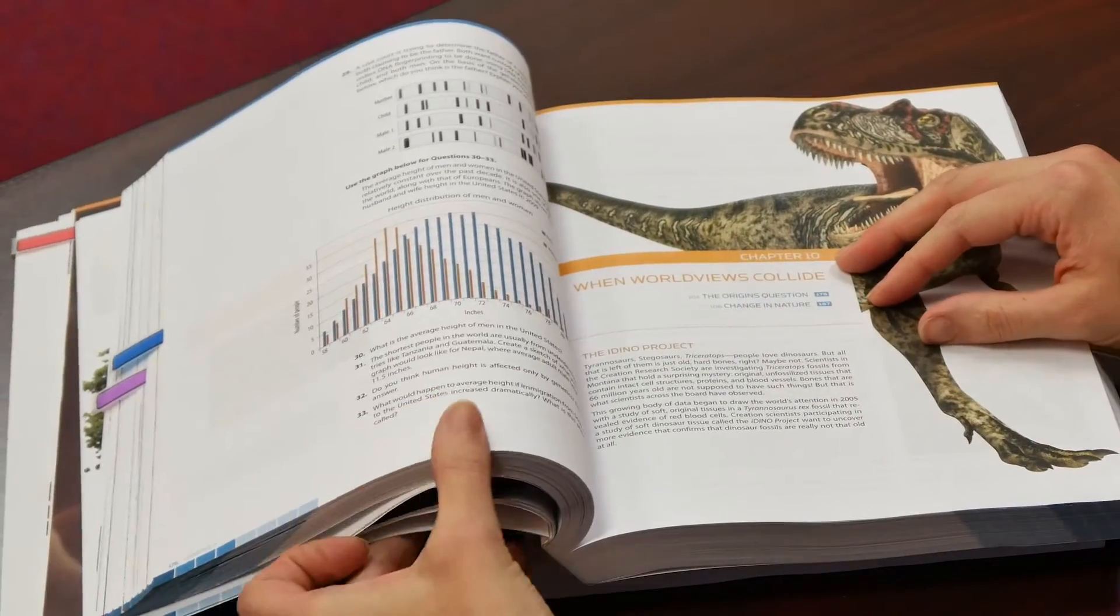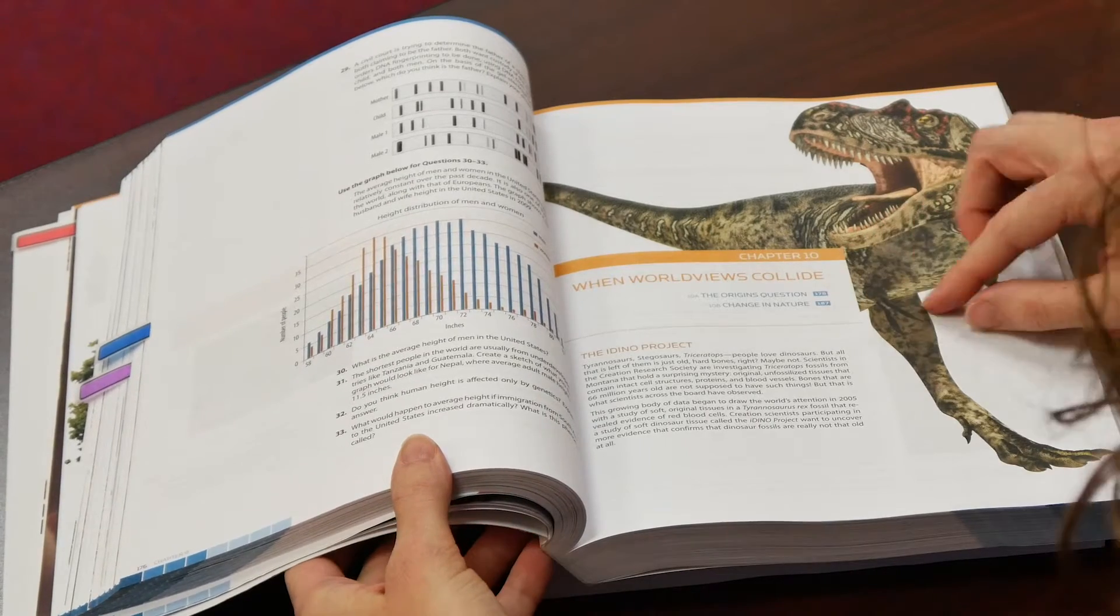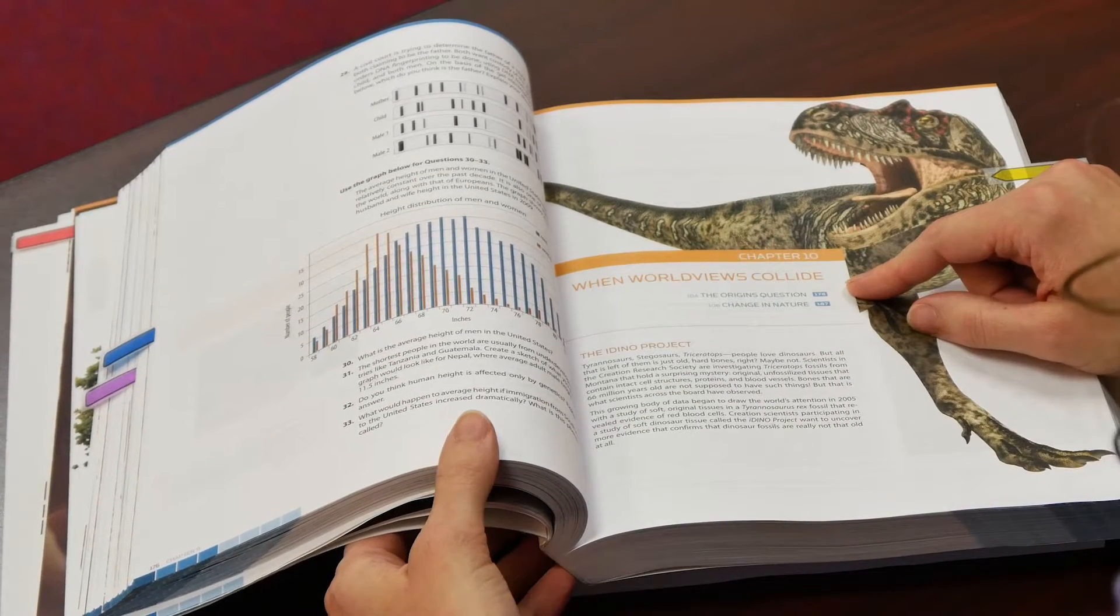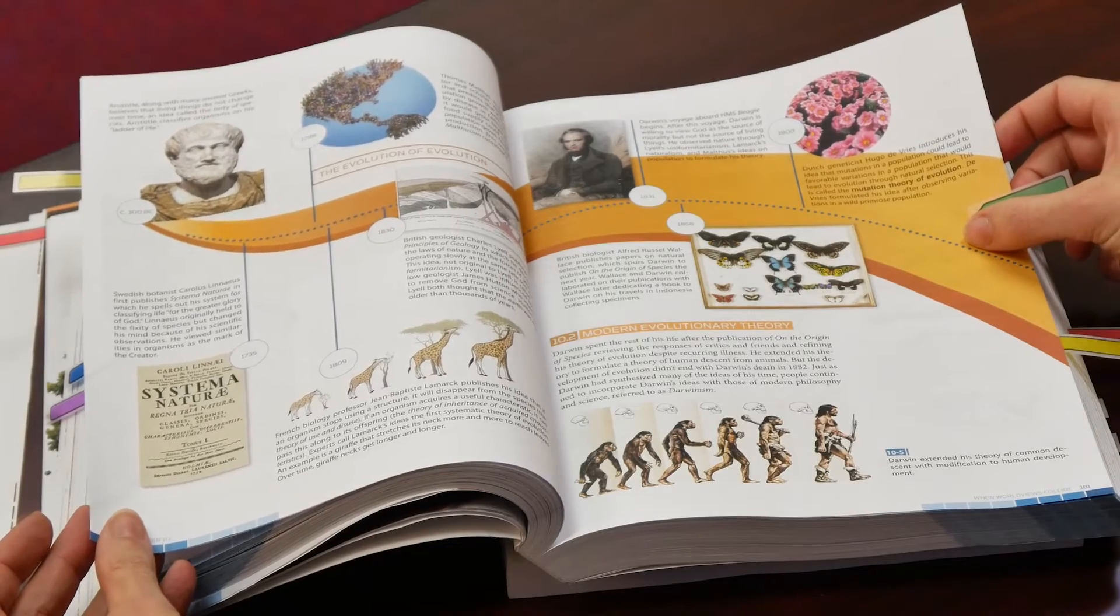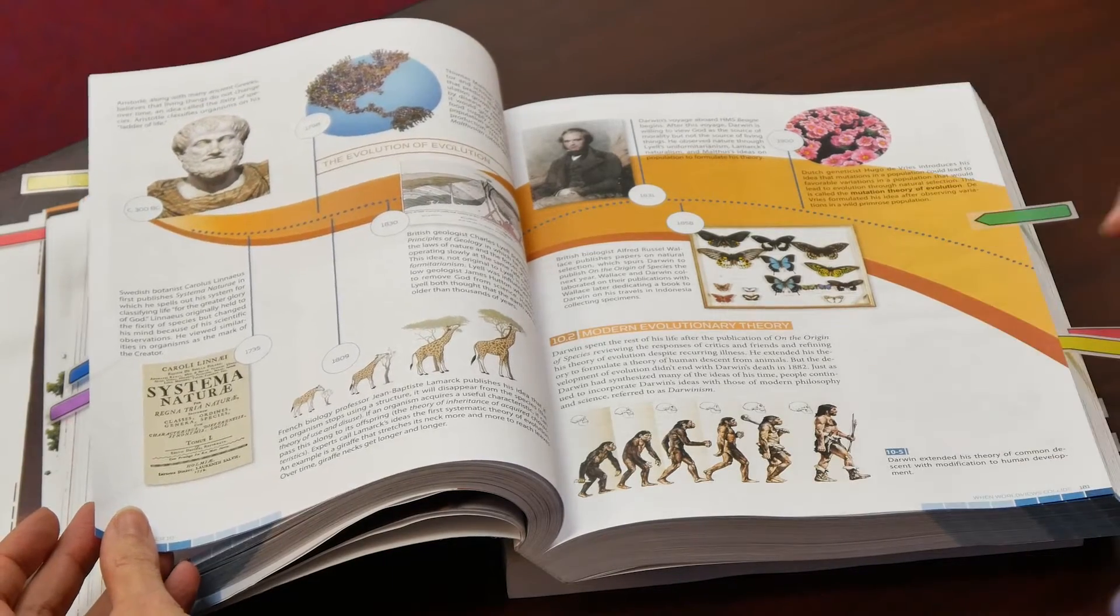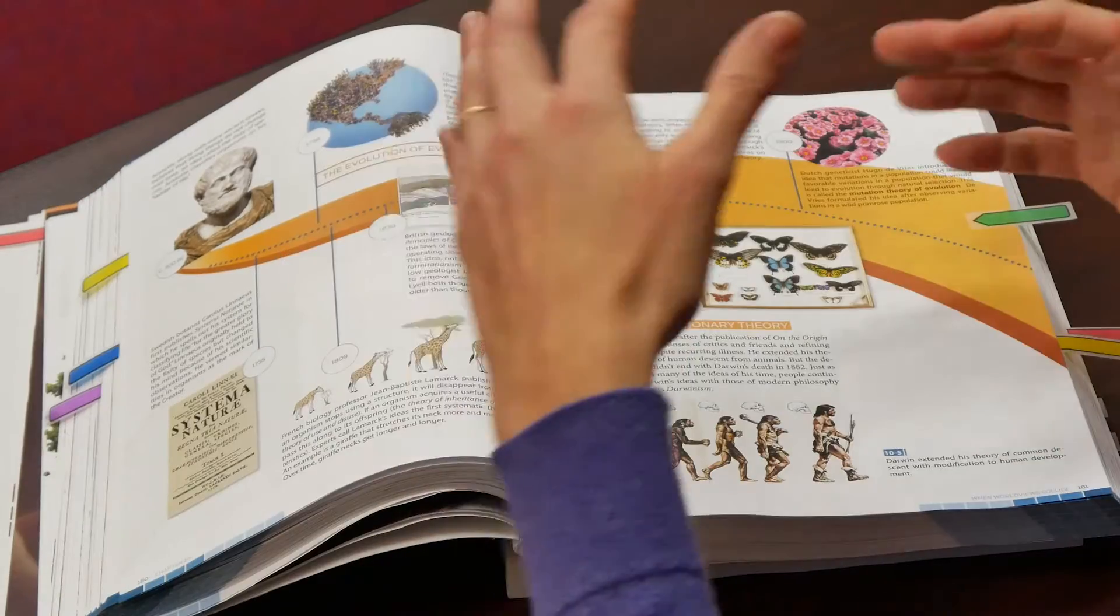One of the biggest issues will be evolution and we have a whole chapter on it. The goal of this chapter is to provide as robust an education in evolution as they would be getting in a secular biology class, but then we're going to rebuild it from a Biblical position. Here's a whole timeline of evolution showing the history of the development of evolution, and later on we'll repeat this with a timeline on the Bible's story.